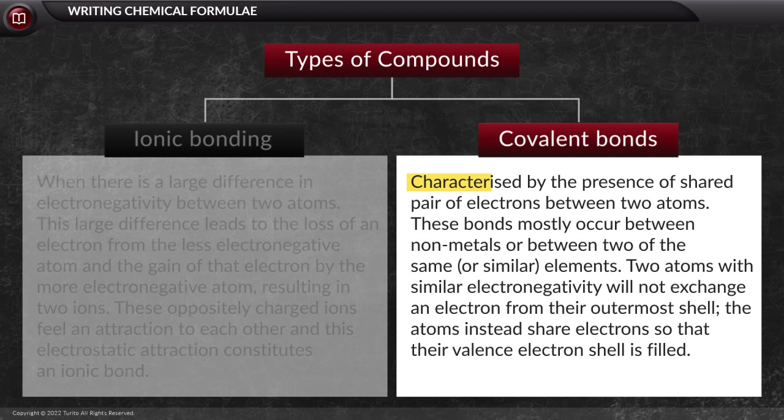Covalent bonds are characterized by the presence of shared pair of electrons between two atoms. These bonds mostly occur between nonmetals or between two of the same or similar elements. Two atoms with similar electronegativity will not exchange an electron from their outermost shell. The atoms instead share electrons so that their valence electron shell is filled.